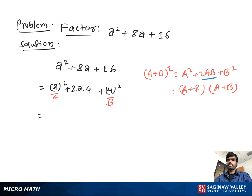So it looks like a² + 2ab + b², and we can write the factored form as (a + 4)², or equivalently as (a + 4)(a + 4). This is our final answer.